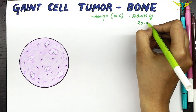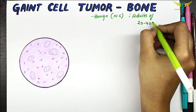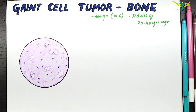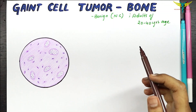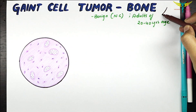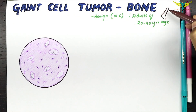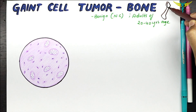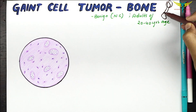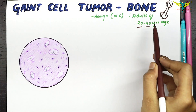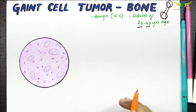It occurs in adults of 20 to 40 years of age, that is when the skeletal growth of the bone is complete. The giant cell tumor of the bone usually develops at the end of the bones — so if this is a bone, it usually occurs at the end of a bone in the age group of 20 to 40 years.